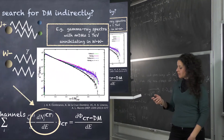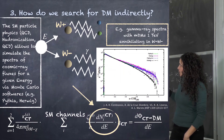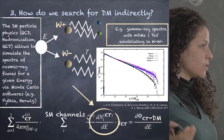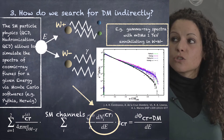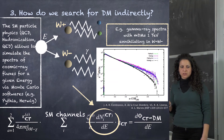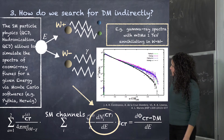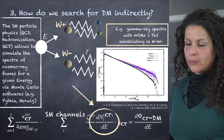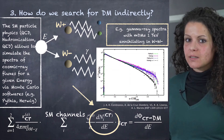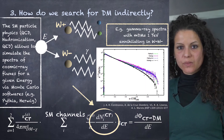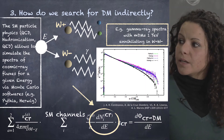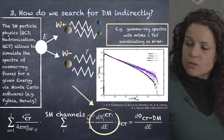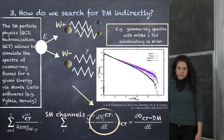As a next step, we consider some standard model channels. Assuming the W boson channel, we need to observe the cosmic rays generated by the decay event of this particle. This is simulated via Monte Carlo event generator software that contains perturbative QCD, hadronization, and QED, giving us the flux. This shows the generated flux from four different Monte Carlo software packages. Here we have the energy of the event normalized to the dark matter particle mass, and the differential flux being generated.